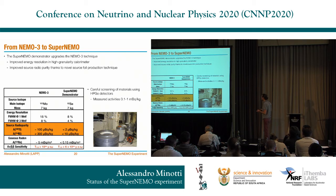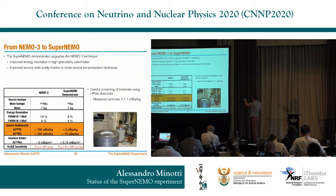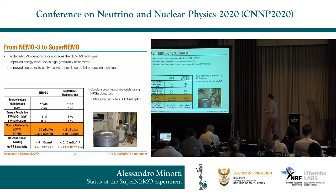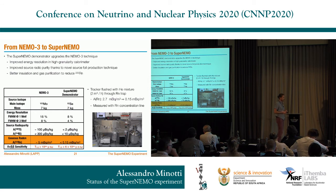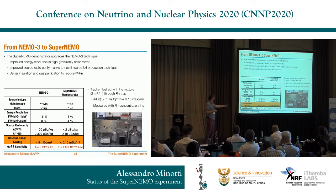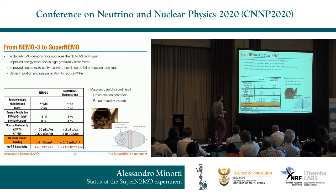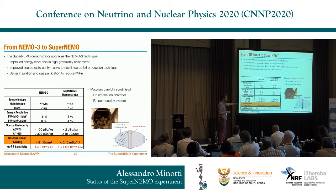Every material used in SuperNEMO — from cable ties to every wire and cable — is measured with germanium detectors to characterize gamma emissions, with activities ranging from 0.1 to 1 mBq/kg or less. The tracker is flushed with a new gas mixture through a radon trap to reduce radon activity, which is so low that a radon concentration line must be used: argon is flushed into the tracker, the accumulated radon is then measured with a dedicated device. Additionally, radon emanation from every material is studied in emanation chambers — especially for the PMT glass, which is the most radioactive component — and every material layer is tested for radon permeability.